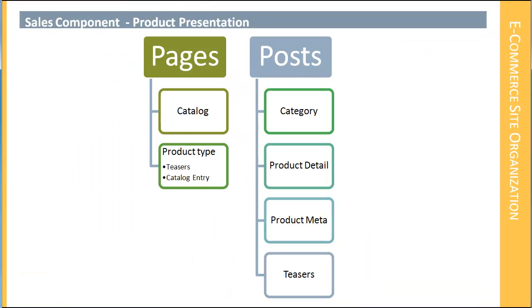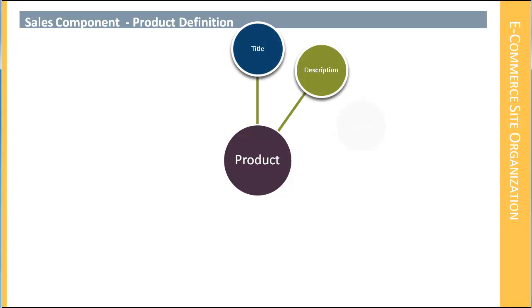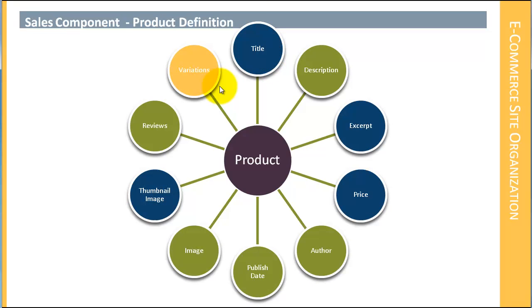The next thing we have is our method of data entry. We have our product and all these pieces of that product, and we have a mixed data entry process. We will enter the title, the excerpt, the price, and the thumbnail image both in our WordPress eCommerce catalog plugin system and also in the WordPress post. Then we will do our description, our author, our publish date, our image, and our reviews — those will all go exclusively inside the WordPress post framework. And the variations will be exclusively inside of the WP eCommerce plugin.